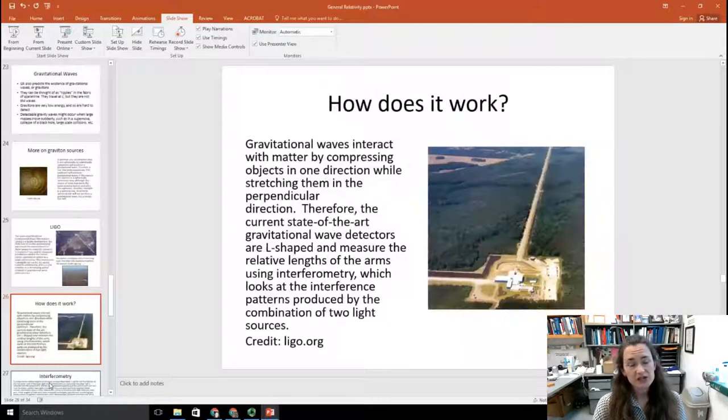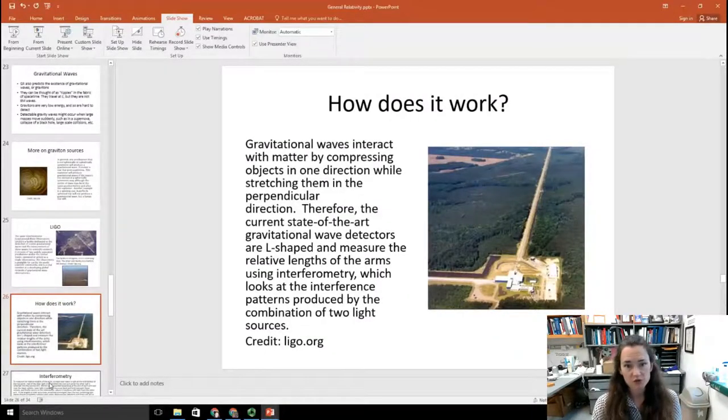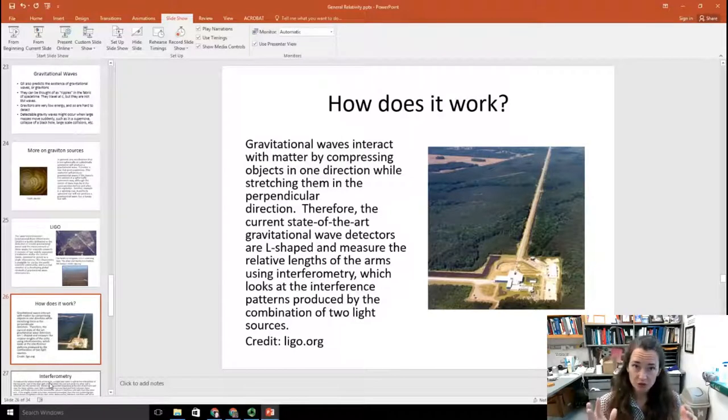How it works is that gravitational waves interact with matter by compressing objects in one direction while stretching them in a perpendicular direction. Remember, they're ripples in the fabric of space-time. So state-of-the-art gravitational wave detectors are L-shaped, and what they do is they measure the relative lengths of the arms using interferometry, which we discussed pretty extensively in Modern Physics 1, and they look at the interference patterns produced by the combination of two light sources.